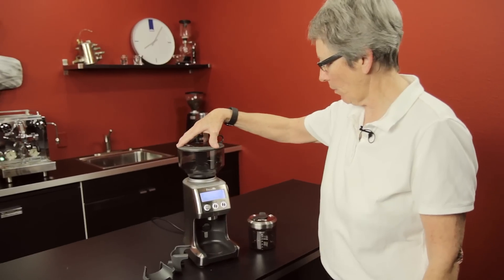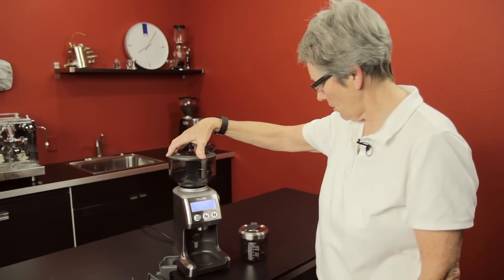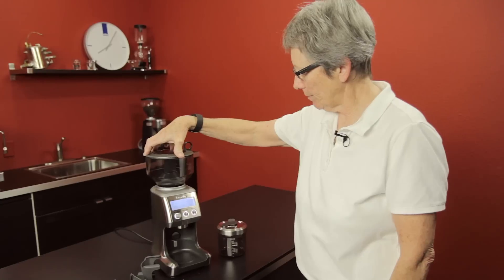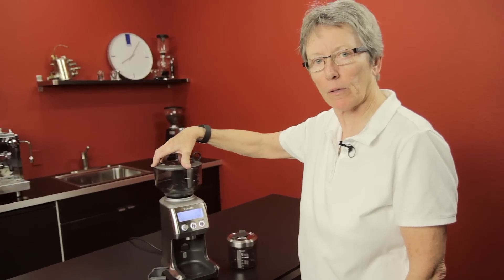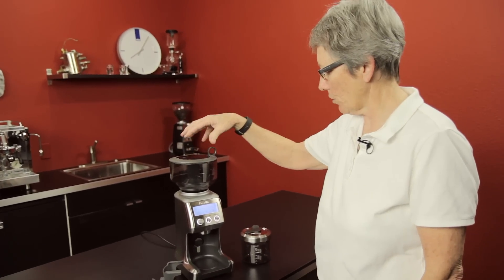So that's the Breville Smart Grinder Pro. Those are the changes they've made. We'll get a little bit of coffee here, put it in the bean hopper, and we'll show you how it grinds.